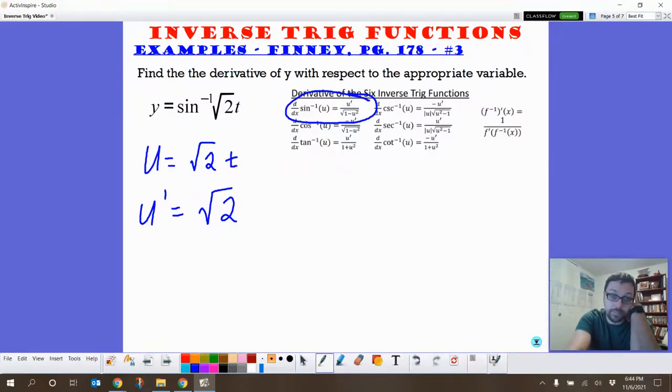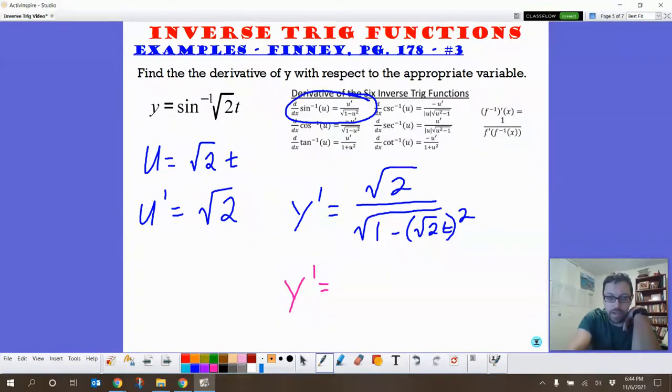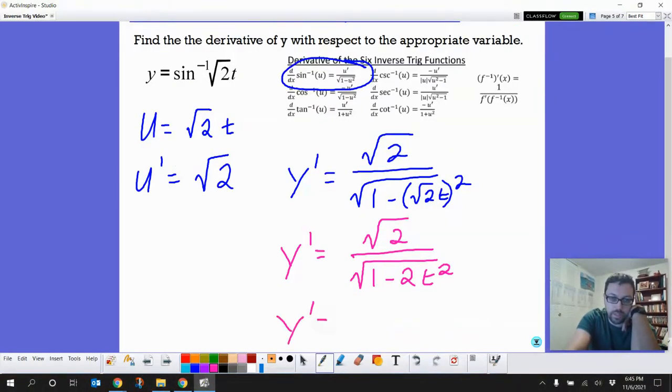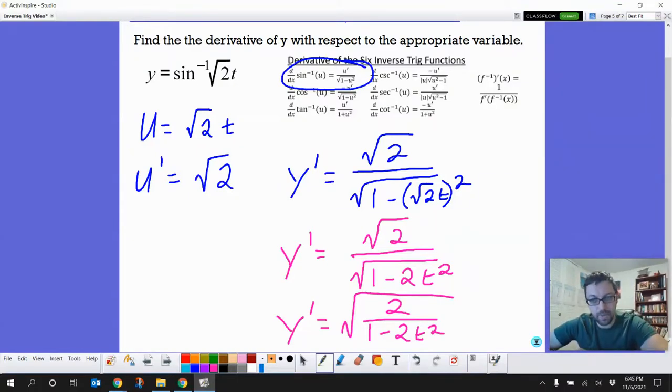So we need to put that into our inverse sine thingy, and we do want to memorize these. But we don't need to memorize them right away, but we'll get them. So u prime in the numerator, that's our square root of 2 over the square root of 1 minus, I'm going to wrap this up this time, square root of 2t squared. Now these are so easy we can do a little simplification, right? So we get the square root of 2 over the square root of 1 minus 2t. Now we could also make it y prime equals just a big square root, especially for this one, like this. But I think that's about all the simplification that we really want to do for this problem.